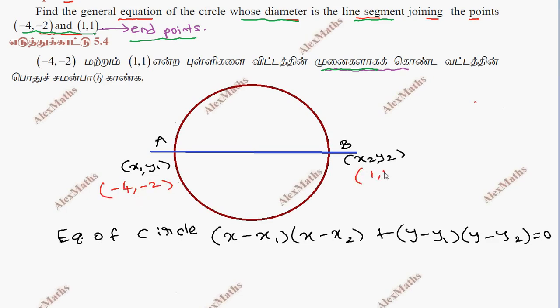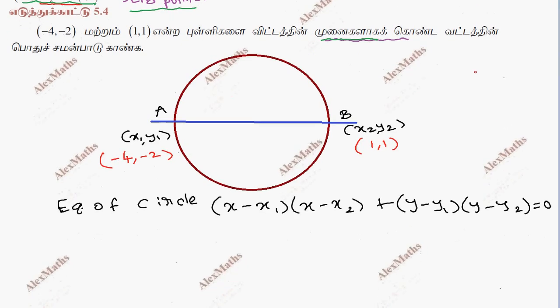So this is 1, 1. So in the formula, x minus x1, so x minus of x1 is already minus 4, plus 4 into x minus x2, x minus 1, plus y minus y1, y plus 2, y minus y2, y minus 1, equal to 0.